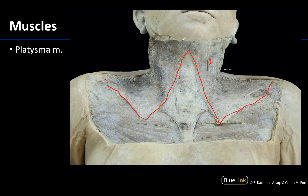The platysma extends to about the inferior margins of the mandible, and if we were to remove the skin you may see some extension into that region. If you can see the platysma muscle in the anterior neck, you are not seeing many other structures of the neck because it would be superficial to most other structures — so if you're not seeing the carotid sheath, the thyroid gland, or the infrahyoid muscles, you're likely looking at the platysma muscle. It's a fairly distinct looking muscle.